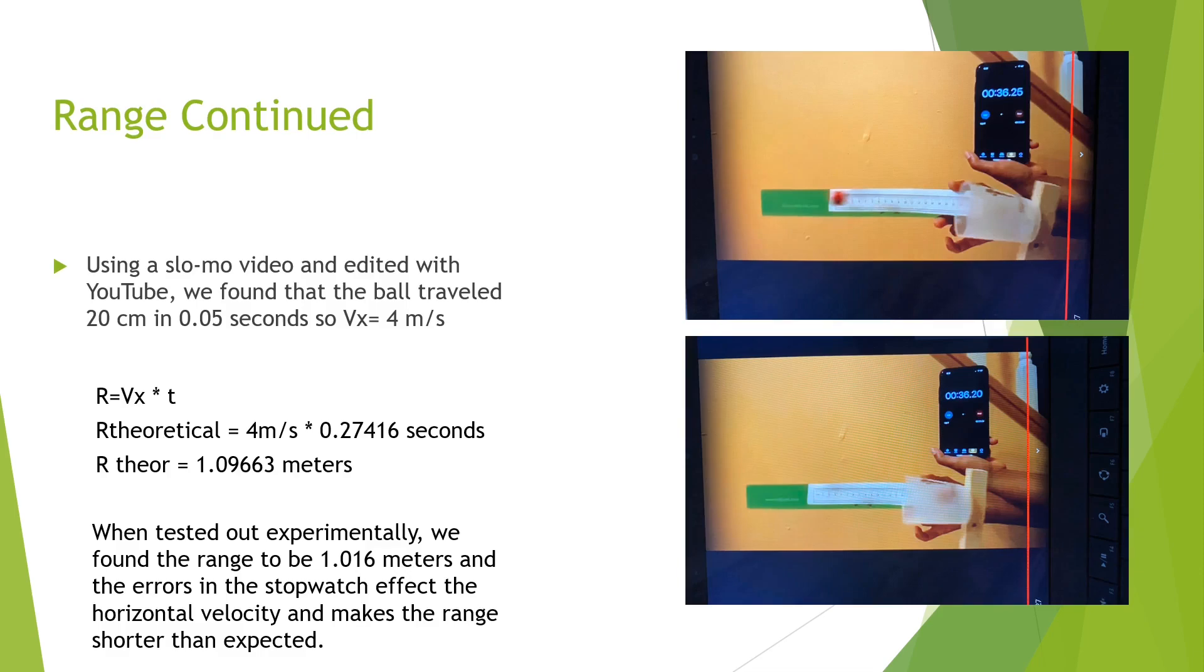Next we needed to find the velocity. We used a stopwatch and a ruler and the velocity came out to be about 4 meters per second. Multiplying this by the time we got a range of 1.09663 meters.